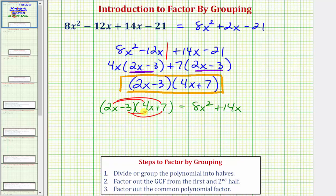Then we distribute negative 3. Negative 3 times 4x is negative 12x, so we have minus 12x. And finally, negative 3 times 7 is negative 21 or minus 21.